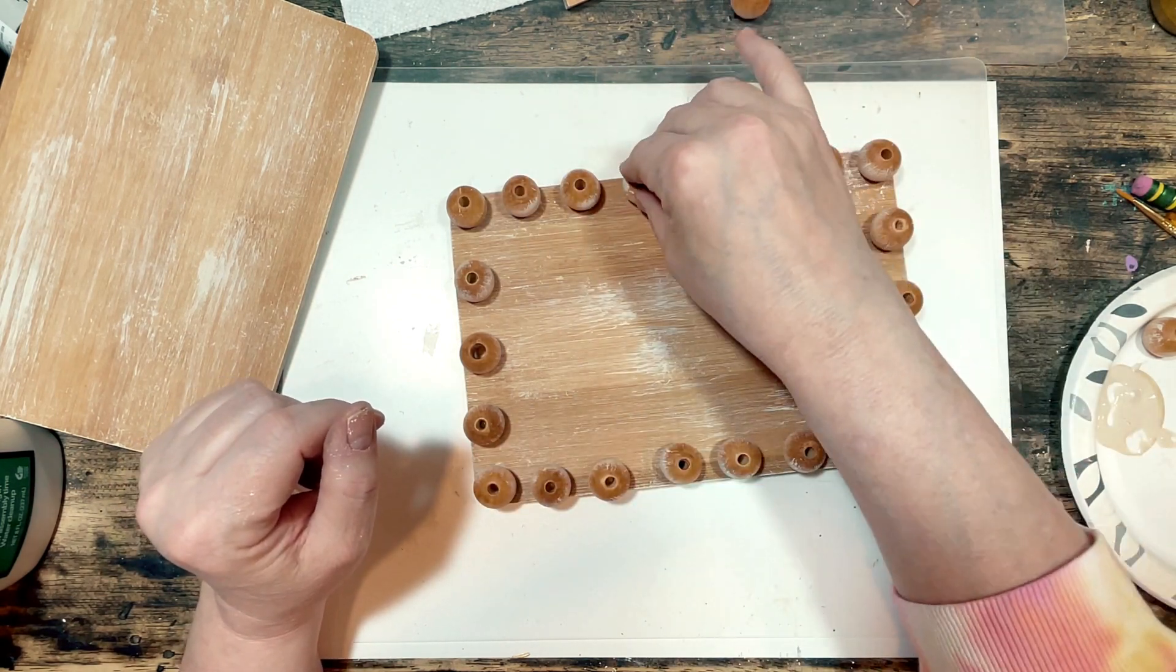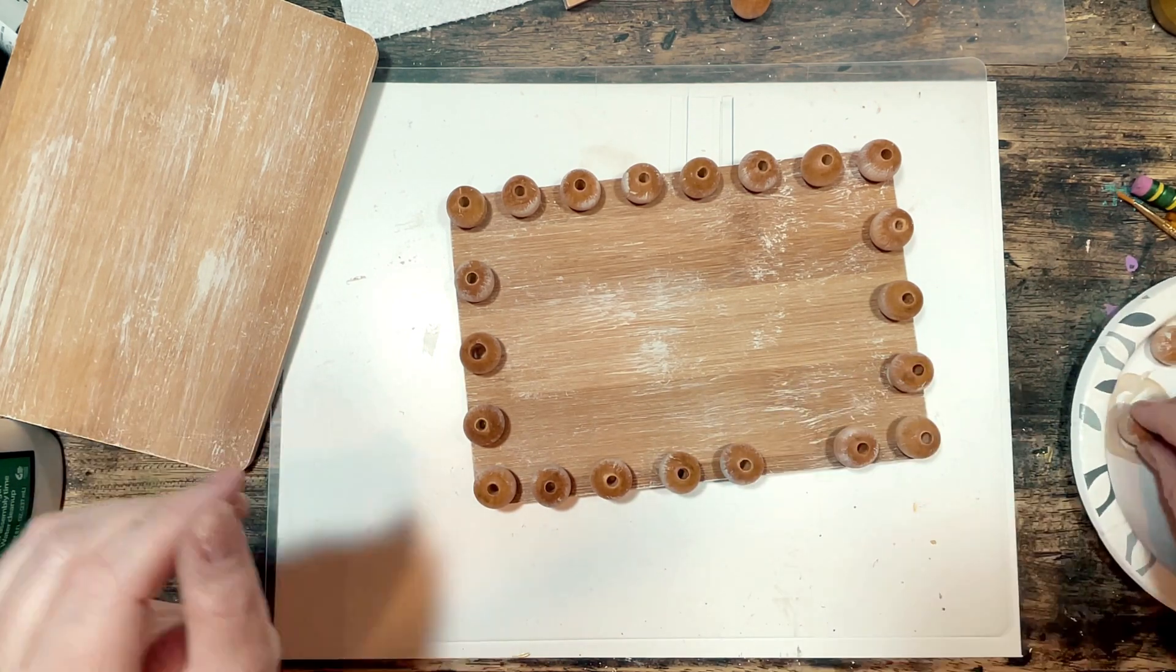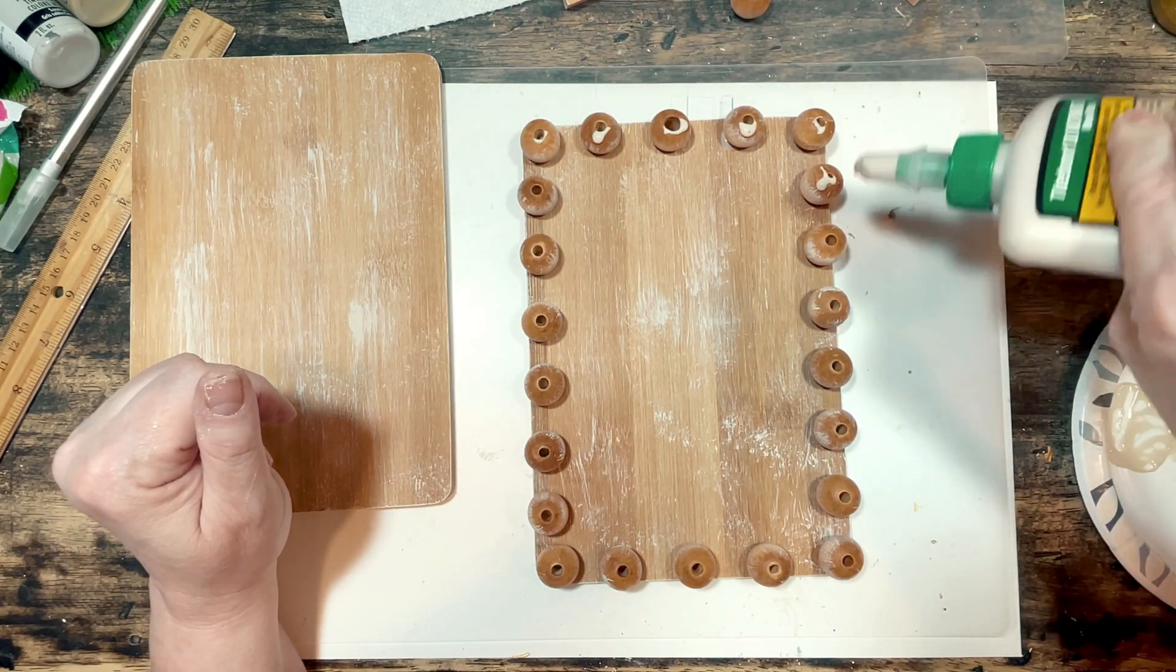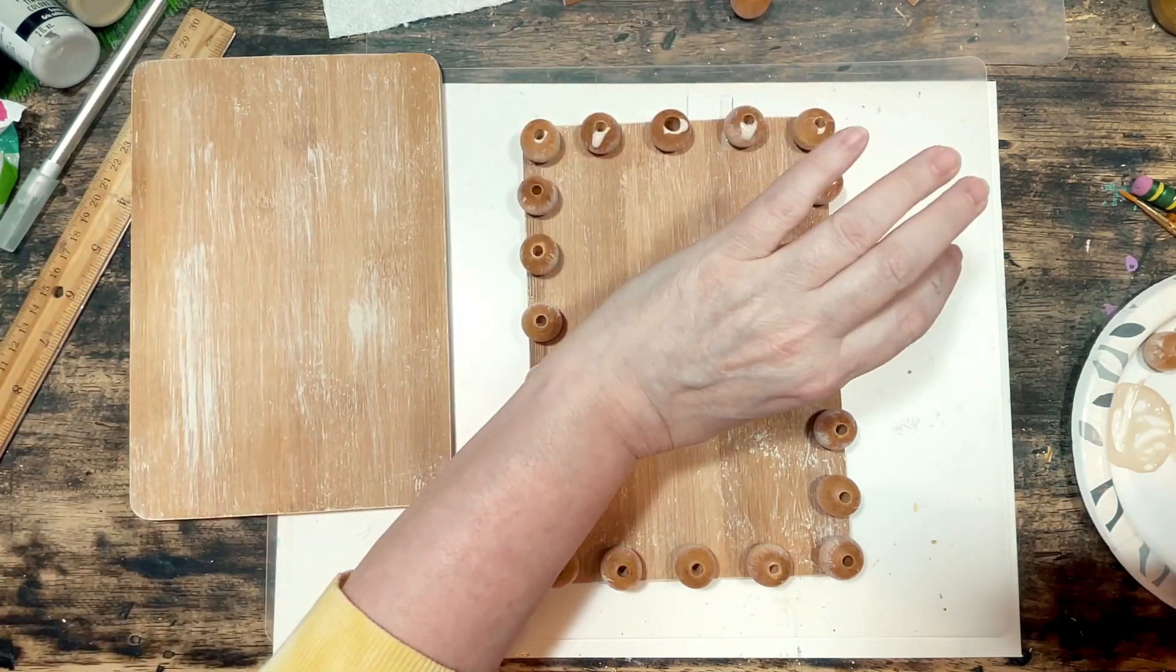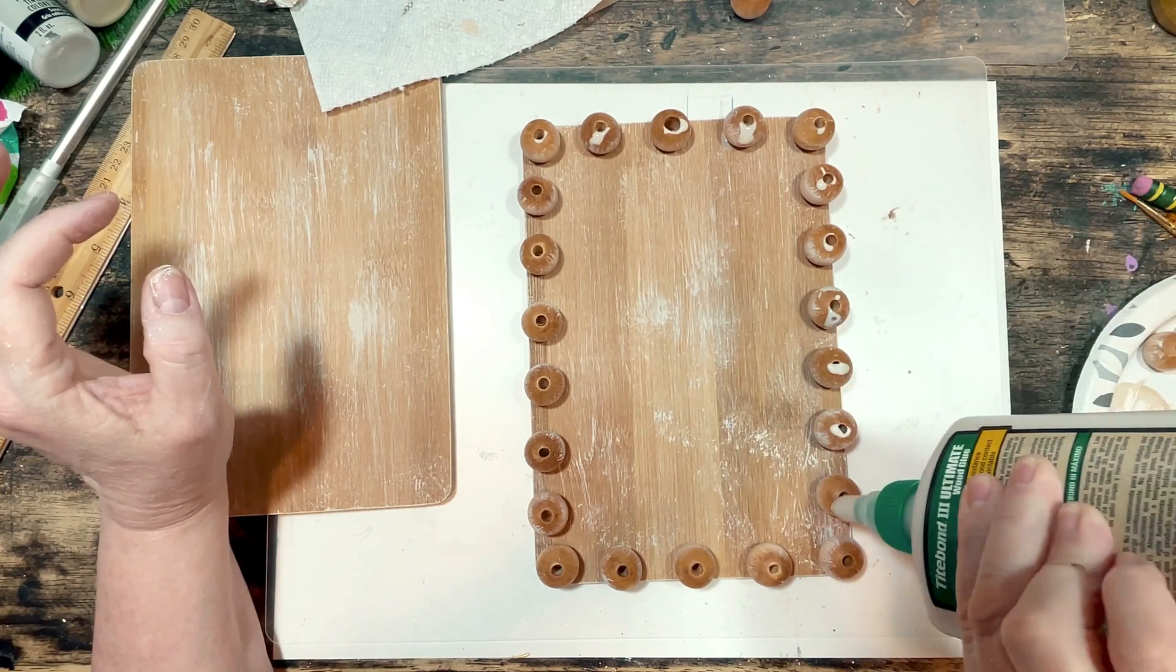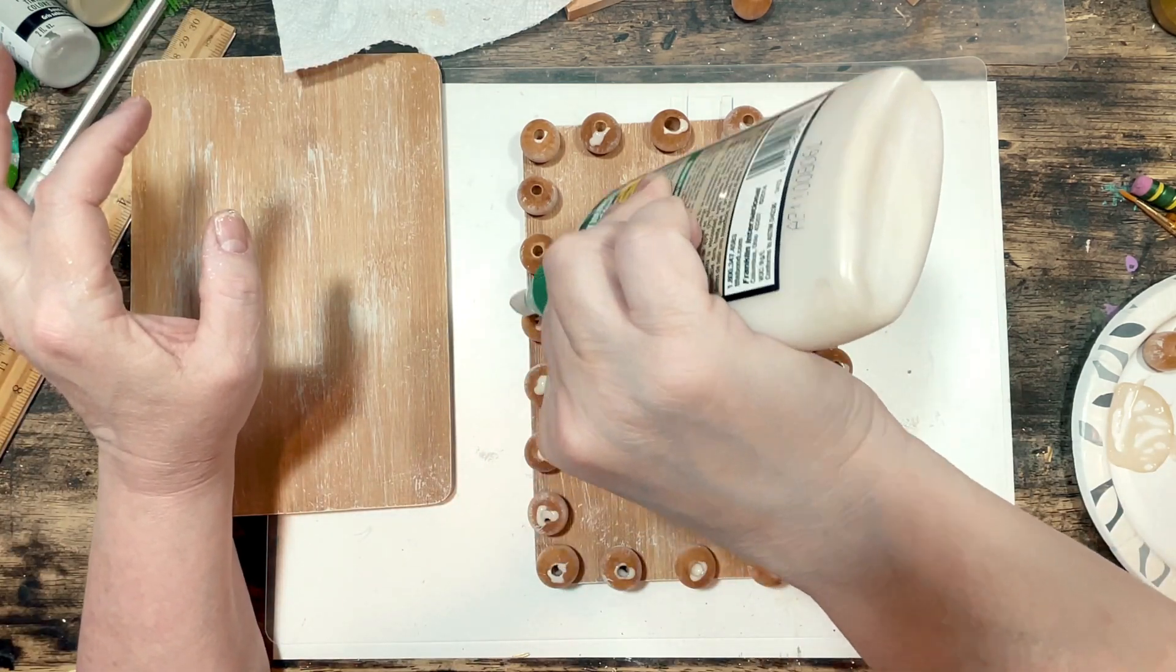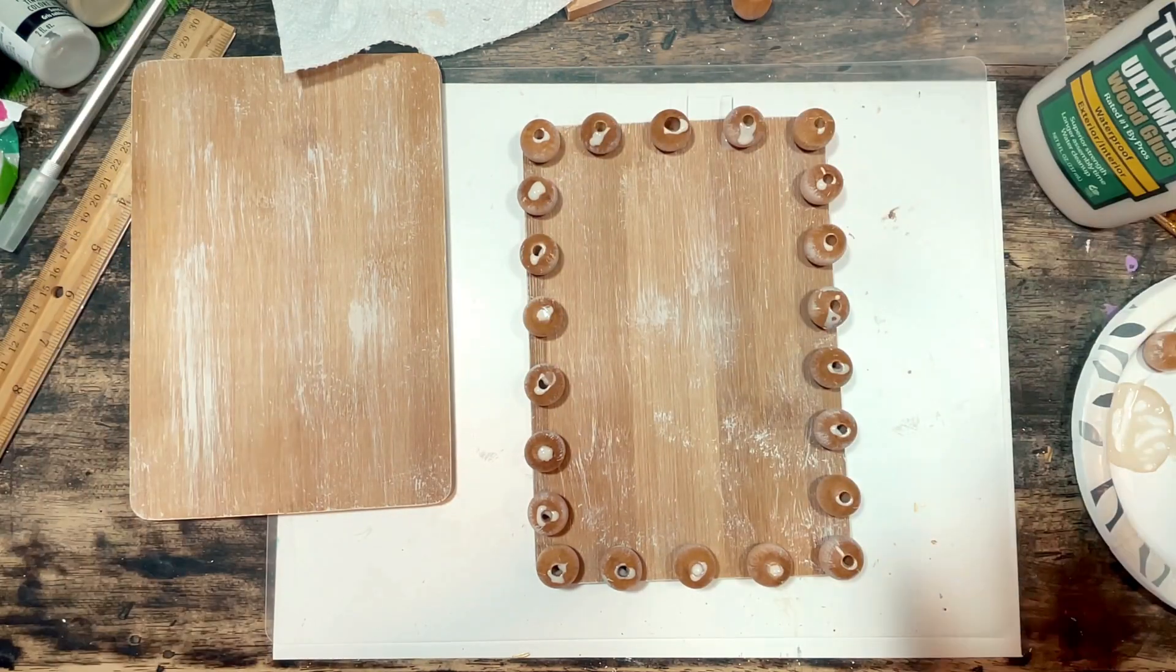Once the beads are glued down I drop some glue onto the tops of the beads and I do have to wipe some of that glue that starts to drip down the sides of the beads and then place the second bamboo cutting board on top of those beads and that one is in line with the cutting board that is under the beads. So it's kind of like a bead sandwich.